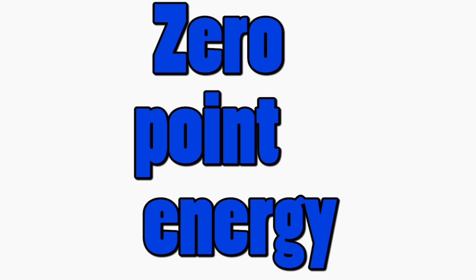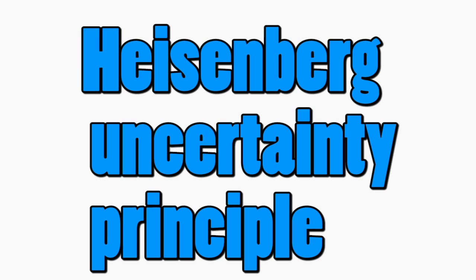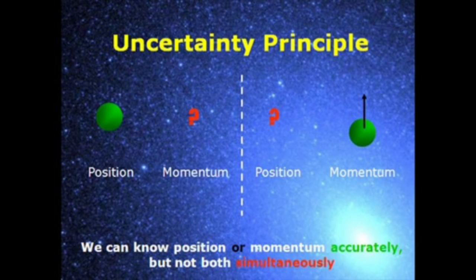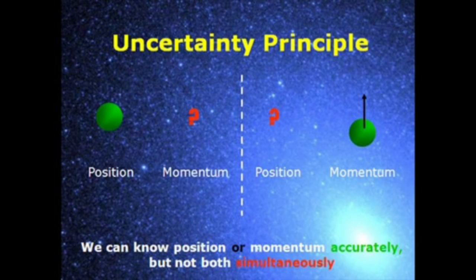Atoms and particles have zero point motion because of the Heisenberg uncertainty principle. Due to the Heisenberg uncertainty principle, a particle or atom cannot have both a specific momentum and a specific position. So if they stop completely, their position and their momentum will be completely known — that will violate the uncertainty principle. And thus, we cannot ever reach absolute zero.